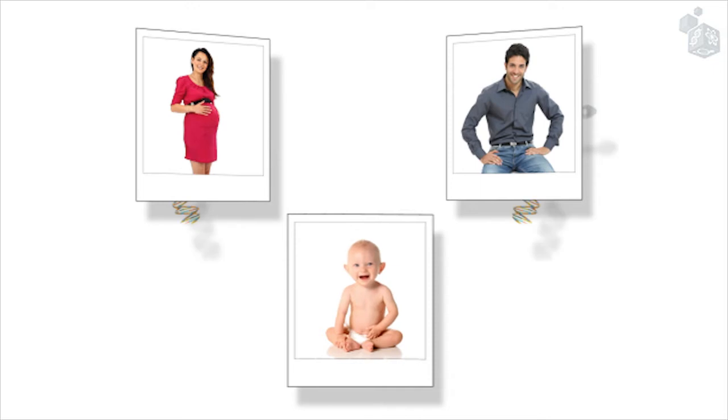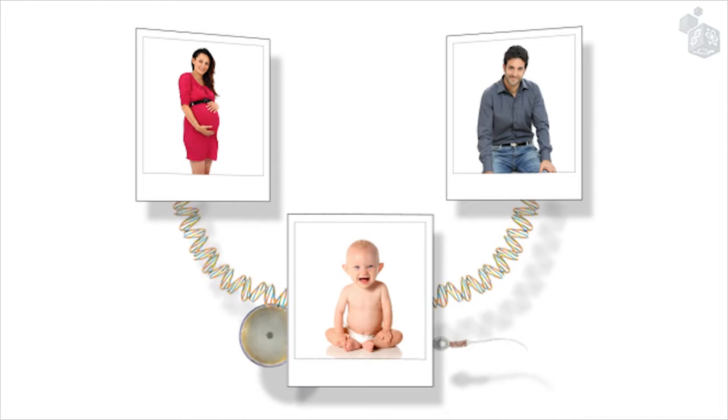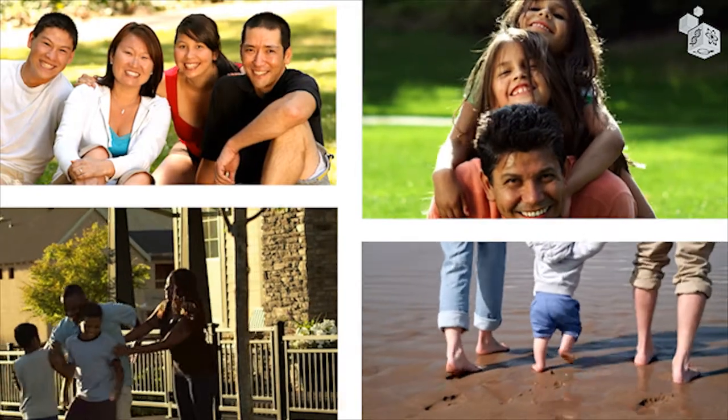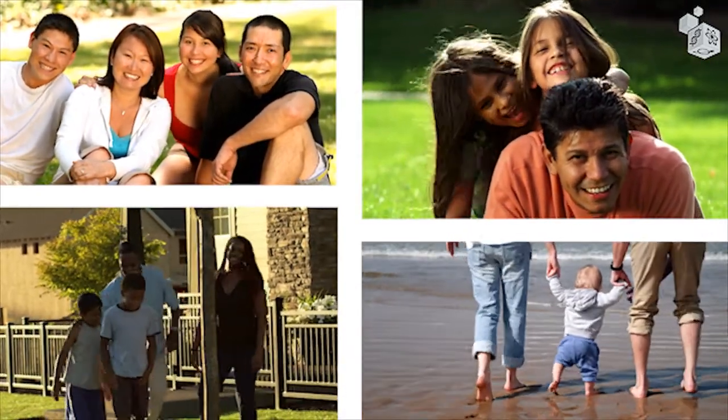By means of reproduction, parents pass their genetic material onto their offspring. That is why we look like our parents. Because we share our genetic information with them.